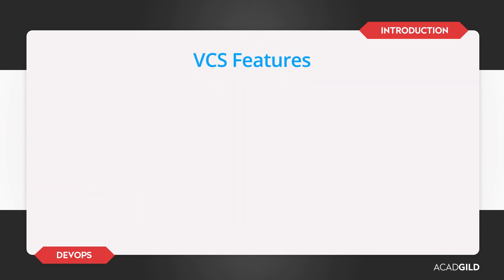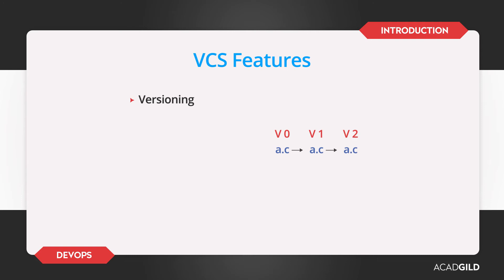Version control systems provide some of the following basic features. First, Versioning — it maintains versions for the files. Suppose there is a file called AC and someone made changes to this file; it becomes AC version 1. Again, if somebody makes changes to that modified file, it becomes AC version 2. All these versions are available for access, so you can still see what is in version 1 and version 0. This is called version history.